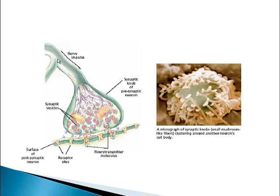Inside these synaptic vesicles are structures called neurotransmitters. That's a wonderful word because it's named exactly what it does. What the neurotransmitter does is it transmits information from one neuron to another — it's just that simple. So inside these synaptic vesicles, these little bubbles inside the synapse, are neurotransmitter molecules. You can learn more about neurotransmitters from your text; there are lots of different kinds, some of which will be more important to us than others.